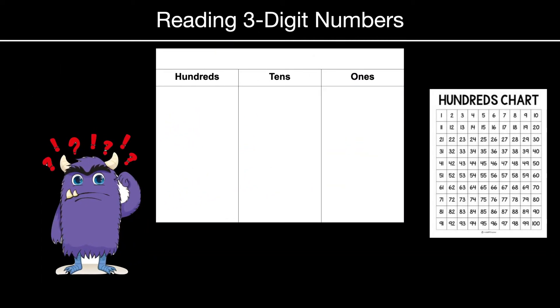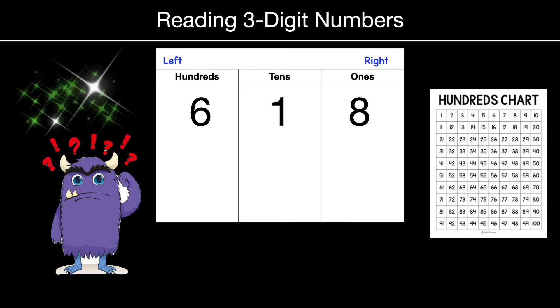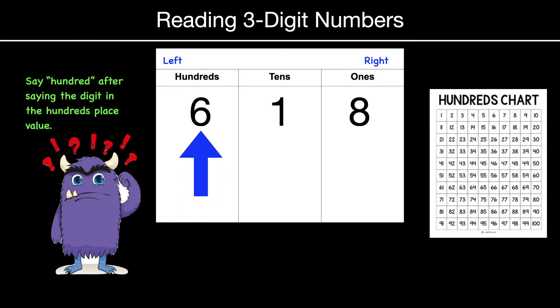So when we read three-digit numbers, it's really not too hard. The rule is that we have to say the word hundred for the digit in the hundreds place value. Let me show you what I mean. The six, you would say 600. Then the rest of the number, you would just read like on that hundreds chart that you see on the right side there. So the one and the eight is just read as the number 18. So that's 618.